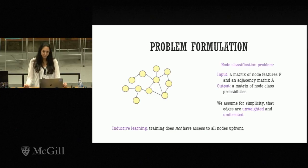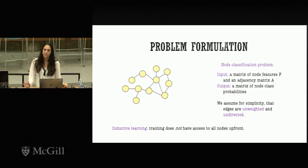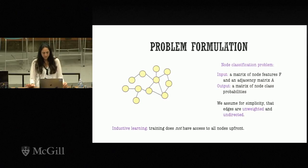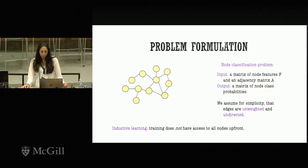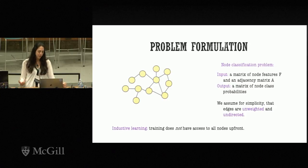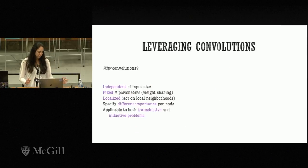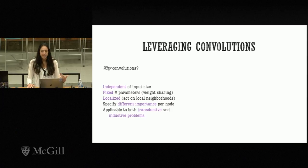As input we have a matrix of node features and an adjacency matrix describing graph connectivity. As output we expect a matrix of node class probabilities. For simplicity I assume edges are undirected and unweighted, though most of the work extends to broader graph types. I'll focus on the inductive learning problem, where training does not have access to all nodes up front — the setting for disjoint graphs split across training, validation, and test sets.